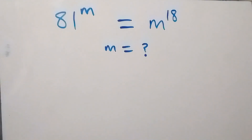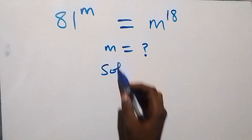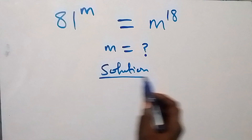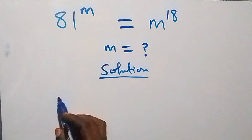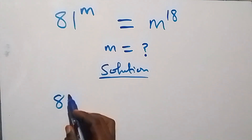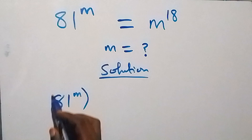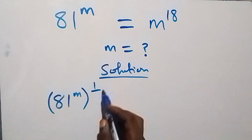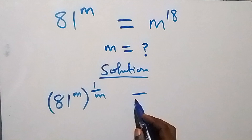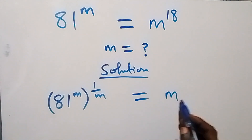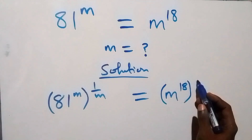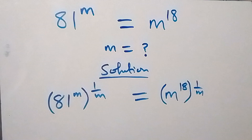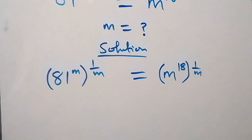Hello, you're welcome. Here's how to solve this nice exponential problem. Let's raise both sides to power one over m. That is, we have 81 raised to power m, then raised to power one over m, which equals m raised to power 18, then raised to power one over m.